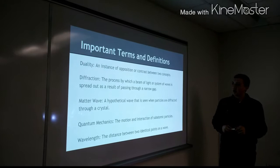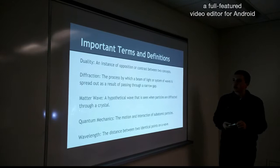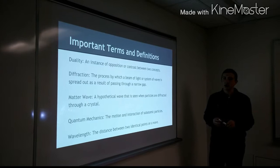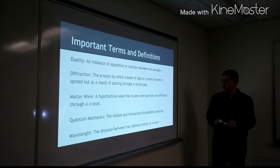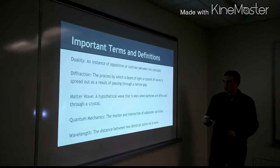So first we have duality, an instance of opposition or contrast between two concepts. Secondly, there's diffraction, the process by which a beam of light or system of waves is spread out as a result of passing through a narrow gap. Then you have a matter wave, a hypothetical wave that is seen when particles are diffracted through a crystal. There's quantum mechanics, which is the motion and interaction of subatomic particles. And finally, you have wavelength, which is the distance between two identical points on a wave.